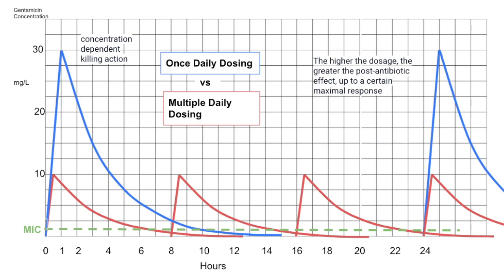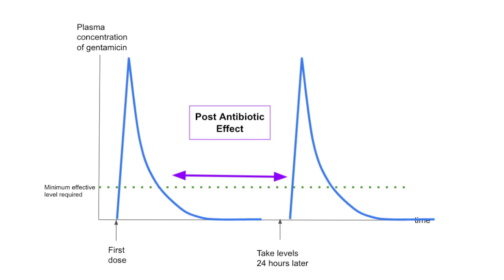With multiple daily dosing you're giving smaller doses more frequently, effectively giving the body continuous exposure to gentamicin. Once daily versus multiple daily dosing has been compared and studied extensively, and it's been concluded they are equally effective. With once daily dosing there is actually less incidence of nephrotoxicity and ototoxicity, leading to the conclusion that toxic events are related more to the length of exposure than the height of the peak. Nowadays, once daily dosing is the standard way to give gentamicin; multiple daily dosing is only seen under specific circumstances.